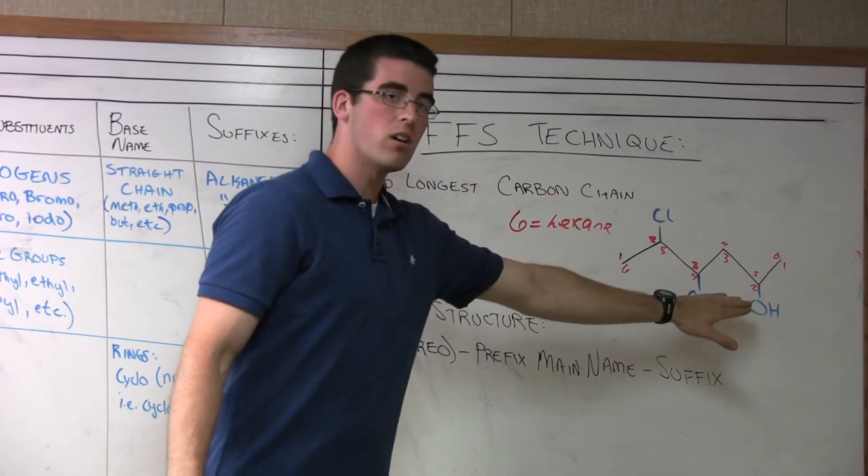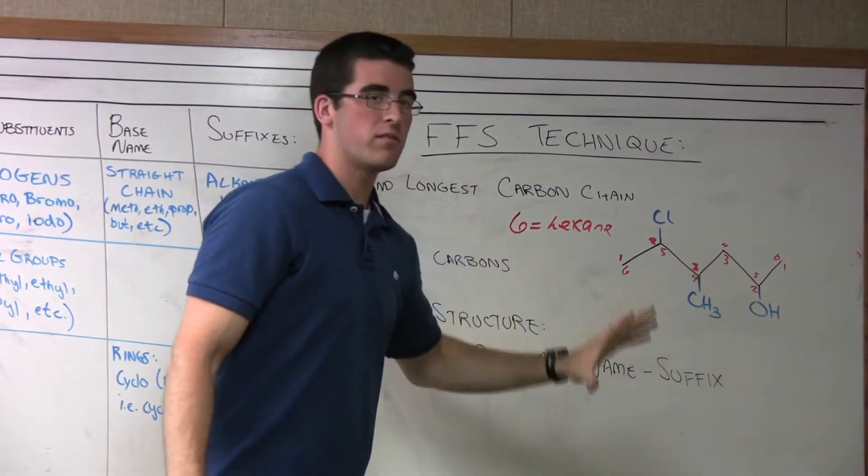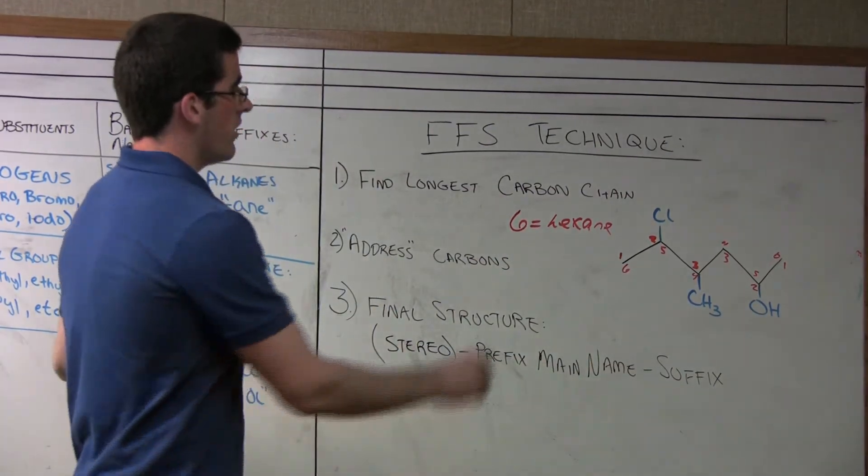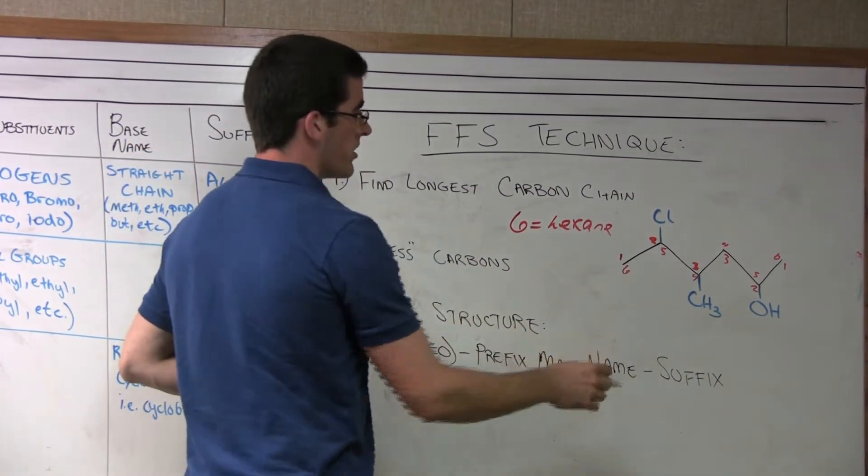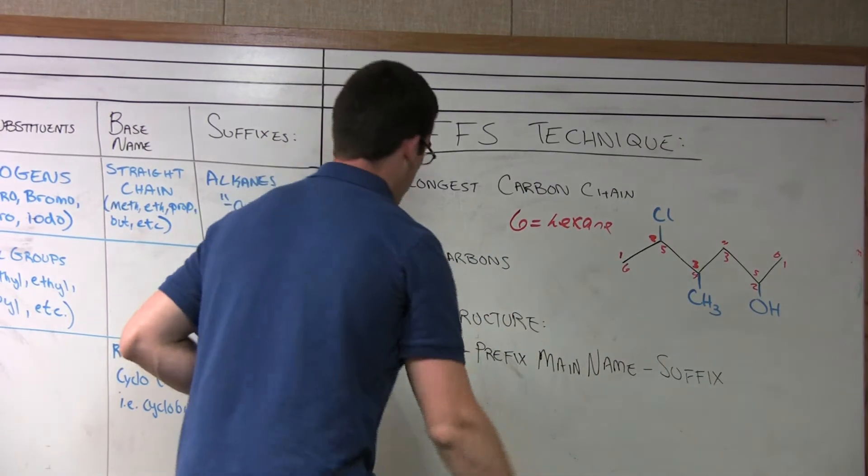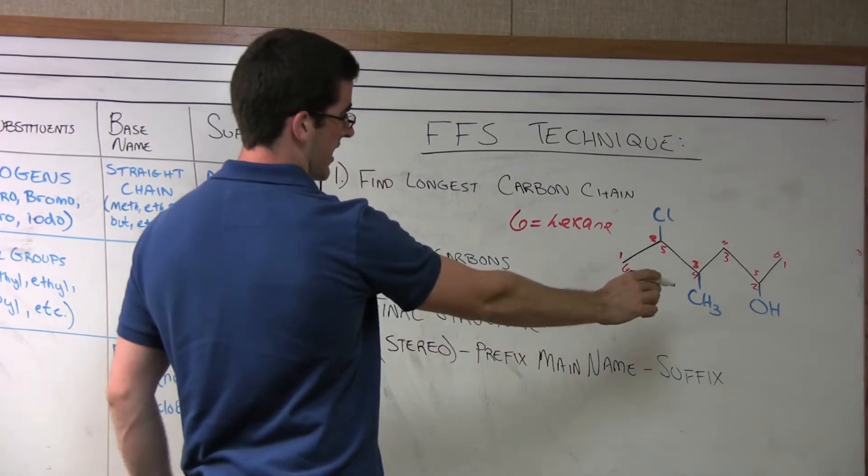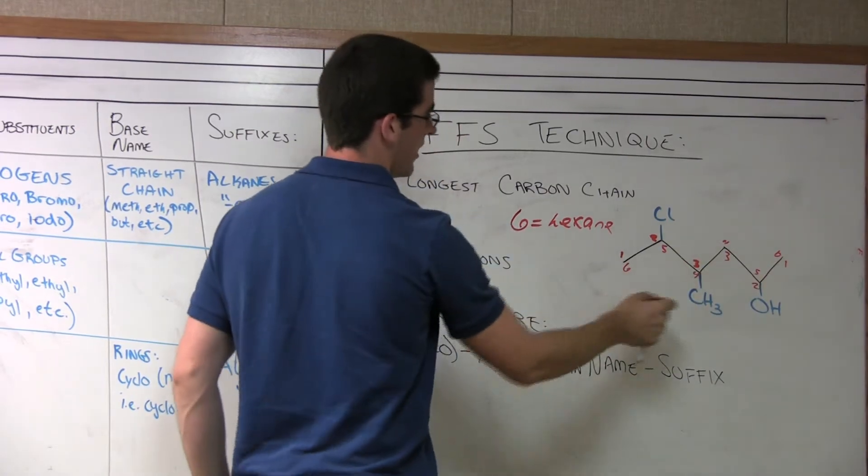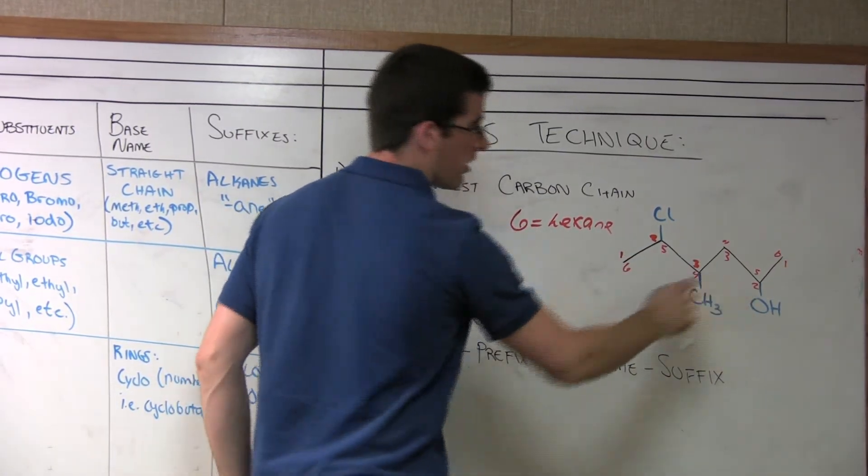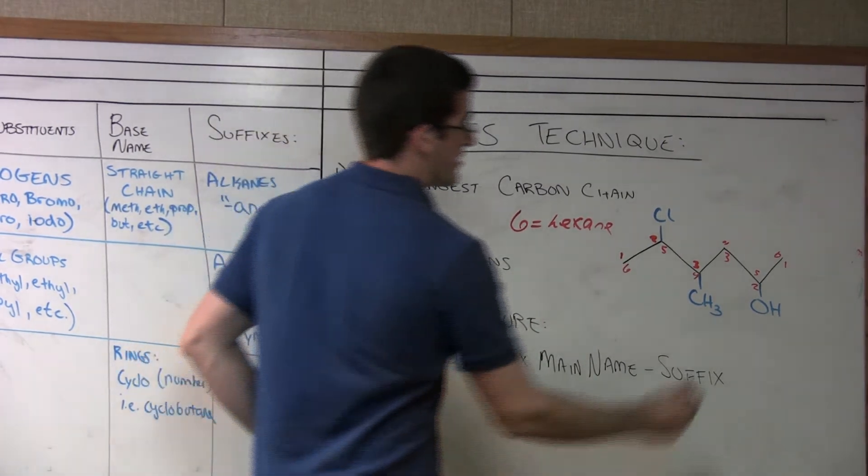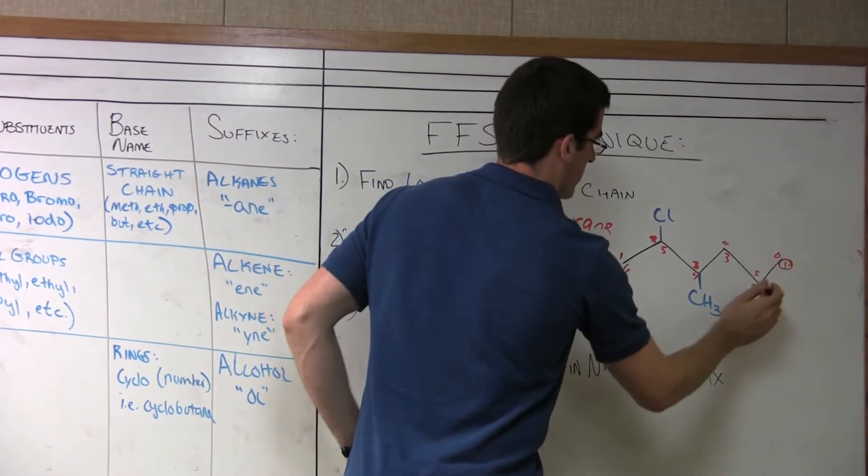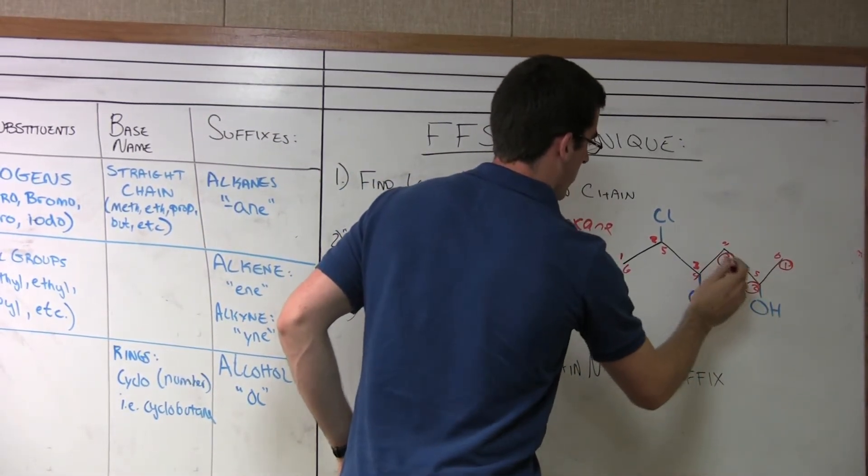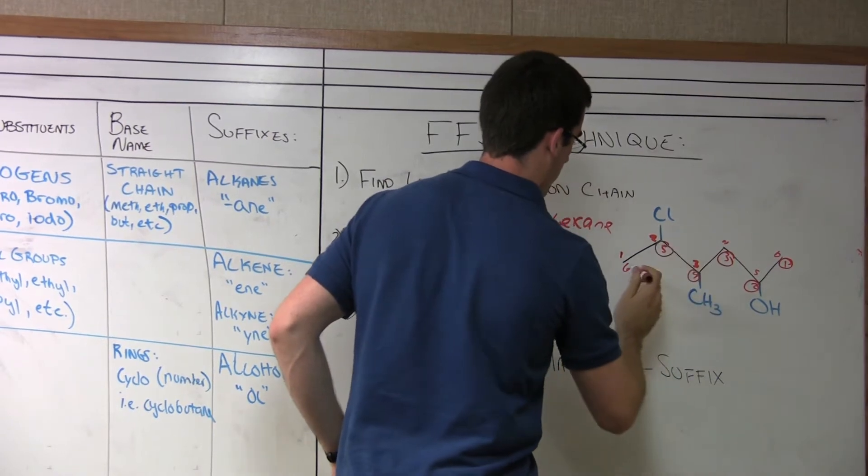Well, we have a halogen, we have an alkyl group, so these are going to be the substituents that become prefixes. And we also have another substituent, alcohol, which is going to take the form of a suffix. So according to IUPAC, the alcohol has higher priority over these two substituents. So we want to give this, since it's the highest priority, the lowest number. So looking at our two numbering systems here, it seems that we want to go from right to left in order to give the alcohol the second position. So we can for sure circle the numbering system we want, one, two, three, four, five, six.